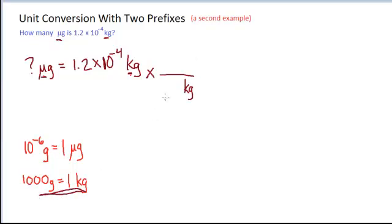In a conversion problem with two prefixes your two steps will involve going through the base unit because that's what the prefix table tells you equivalence is for.